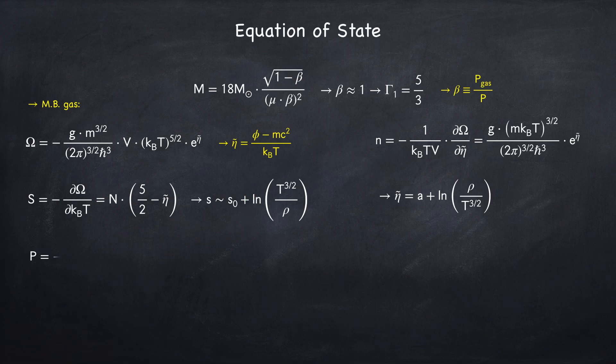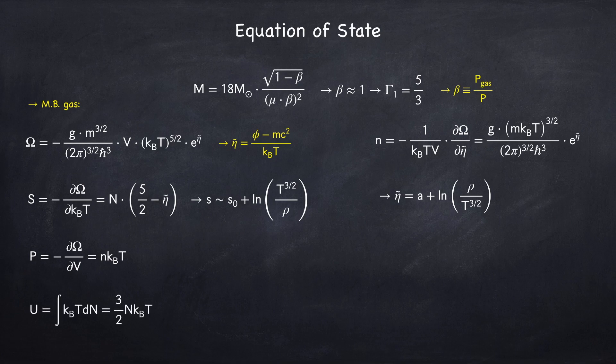We can also find the pressure, which for Maxwell-Boltzmann gas will just be the normal ideal gas law, and the total energy will be 3 halves n kt.